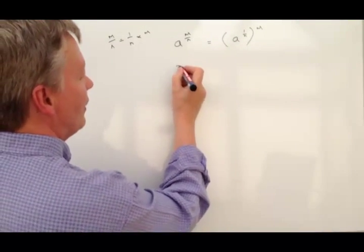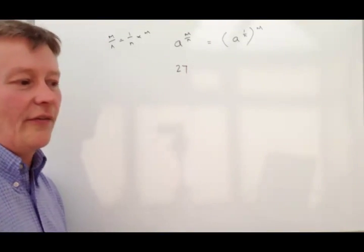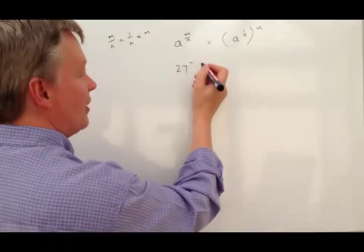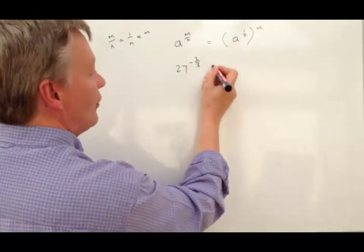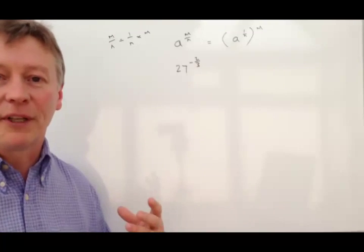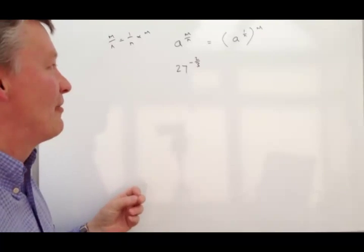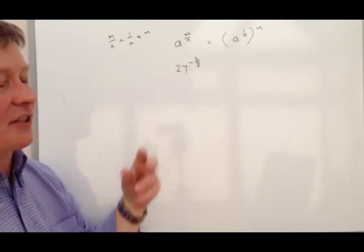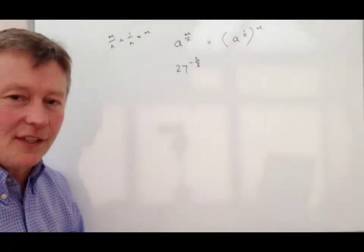Let's say we've got something like 27 to the power of minus 2 over 3. Now I'm having to look at my notes to make sure that I'm okay with this. It's slightly different because we've got a minus sign in there, so it's going to make things a little bit tricky.